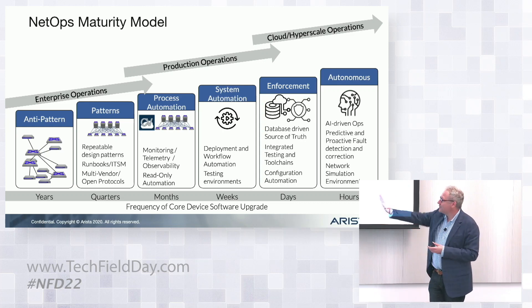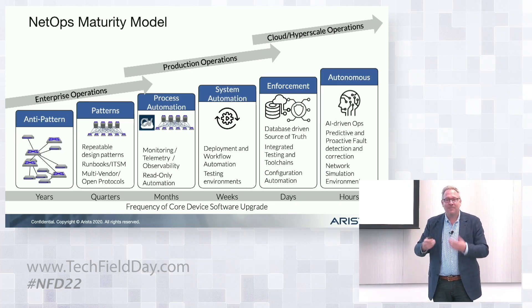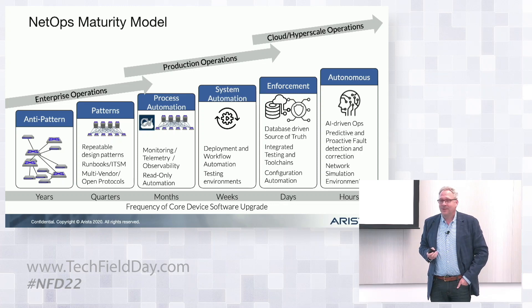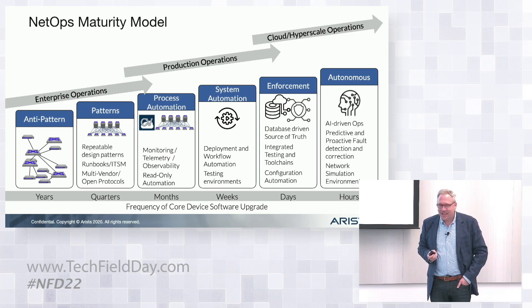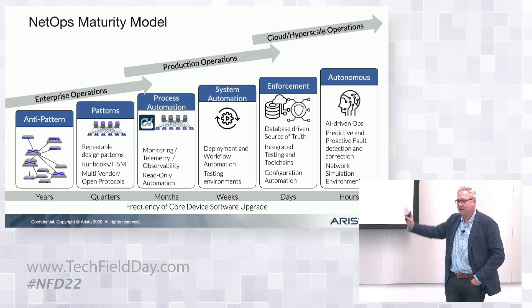Everything we just described requires nothing more than a show command, or maybe a ping and trace route. These are the types of automations that can move somebody forward on this journey — getting comfortable with network automation without having to take a leap of faith into the unknown. Most network engineers I know look like me: we're not in our 20s, I was not born and raised on Python and Go. So providing a practical path to adopt automation and design an operational maturity model to move forward to cooler and cooler capabilities.